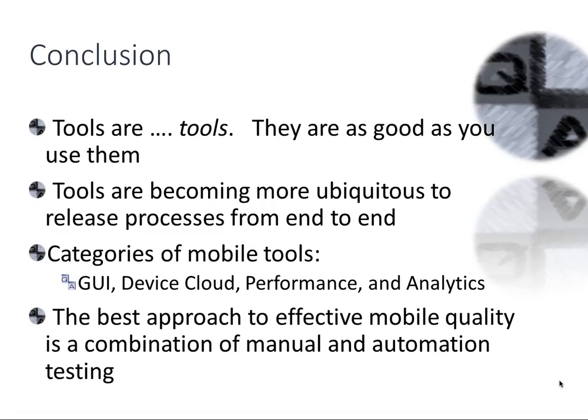The best approach to effective mobile quality is a combination of manual and automation. Manual testing is always going to be there — we will always catch things with our human eyes, edge cases, new bugs and features. Manual testing no longer means you have the title of 'manual tester.' Even anyone who uses the app is a manual tester. You can't replace everything with automation, but using them together in combination is the most effective way.